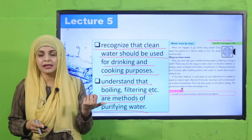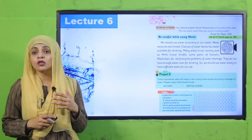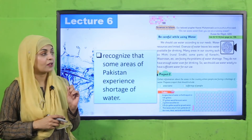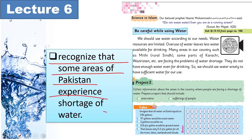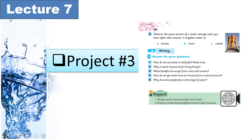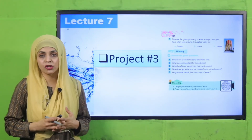Un methods ko hum Lecture Number 5 mein discuss karenge. Then Lecture Number 6: Be Careful While Using Water — because water is a limited resource. Aapko isko ehtiaat se istamal karna hai. Students will be able to recognize that some areas of Pakistan experience shortage of water — paani ki kami bhi ho jati hai. And we will also make a project — paani ko hum limited tarike se kaise use karein, ehtiaat se istamal karna chahiye. Lecture Number 7 is Project Number 3, given on page number 103 — mein hum water awareness ke upar ek poster banayenge.